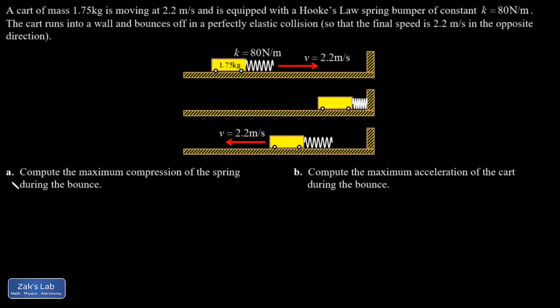And we're going to try to find, in Part A, the maximum compression of the spring during the bounce. So it's key here to realize that at the turnaround point, V is equal to 0.